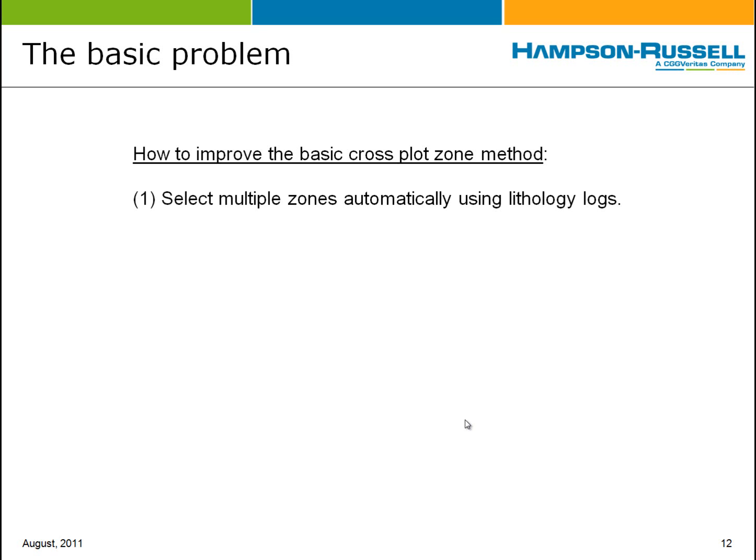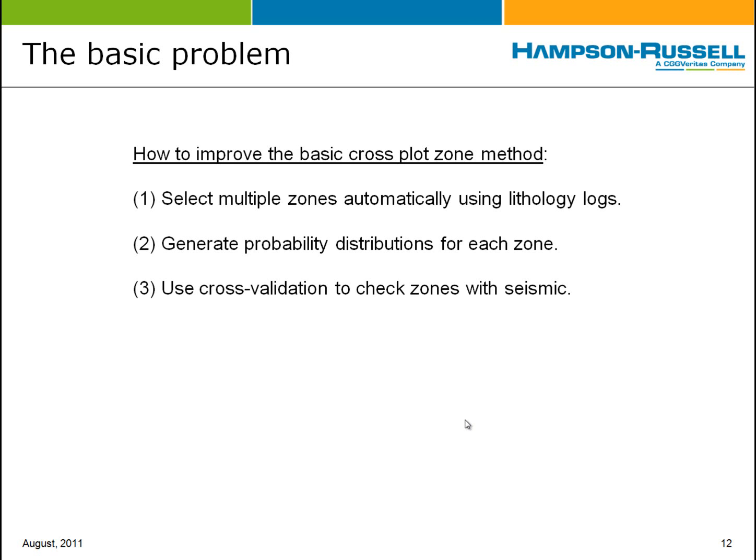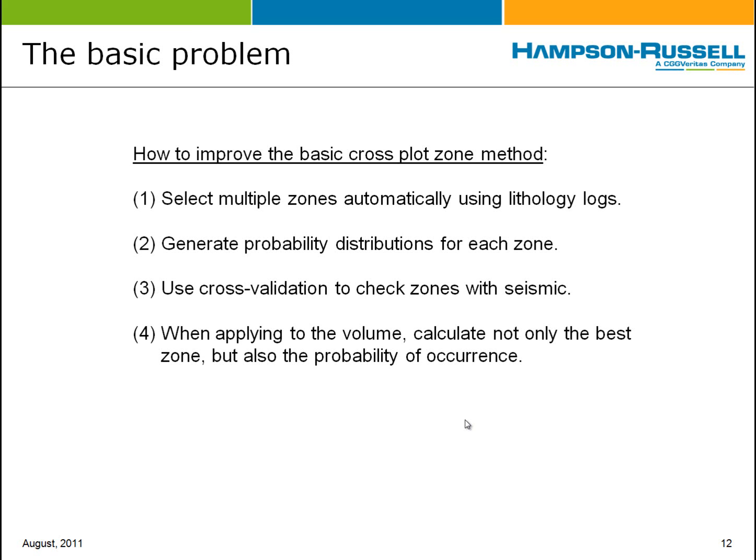The basic problem is how can we improve the cross-plot zone method? Four ideas come to mind. One is we would like to select multiple zones automatically using lithology logs. We would like to generate probability distributions for each zone. We would like to use cross-validation to check the zones with the seismic. And when applying to the volume, we're interested in calculating not only the best zone of the group, but also the probability or reliability associated with that calculation. That's the problem that litho-SI attacks.